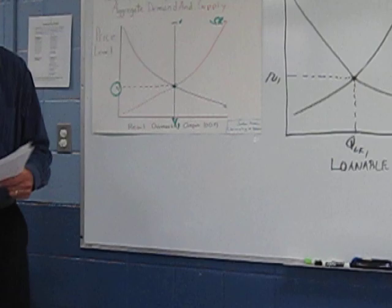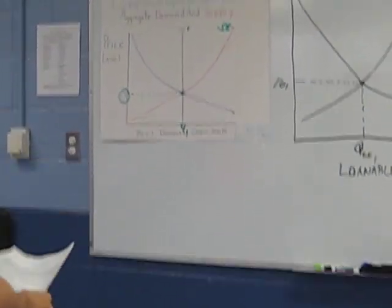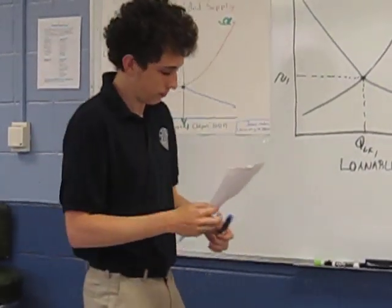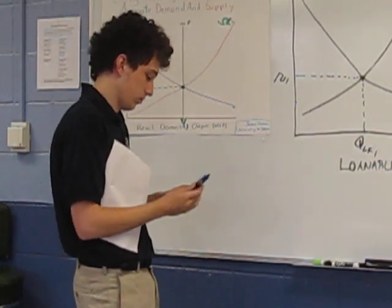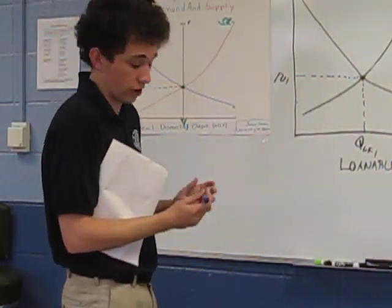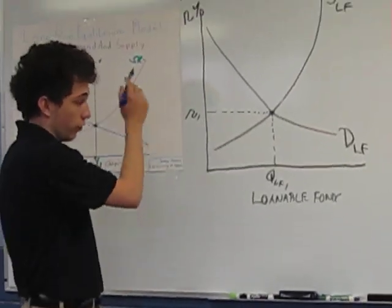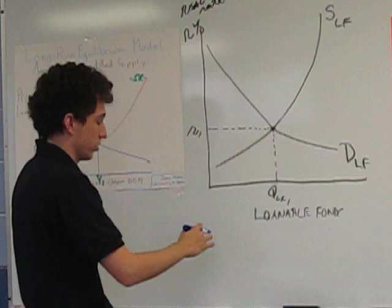Question B. Assume that personal savings in the United States increases. Using a correctly labeled graph of the loanable funds market, show the impact of the increase in personal savings on the real interest rate. So your loanable funds market is going to be labeled as such. It's the real interest rate on the vertical, we're going to have the quantity of loanable funds on the horizontal.